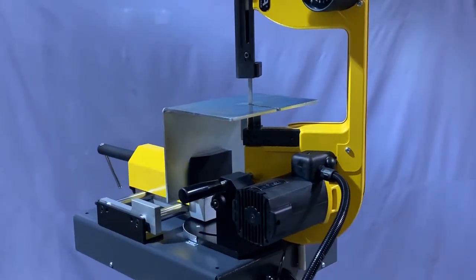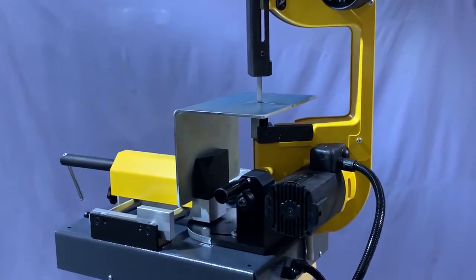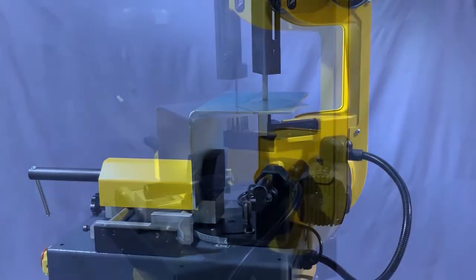Swing the saw head to the vertical position and insert the heavy locking pin into the locking holes.